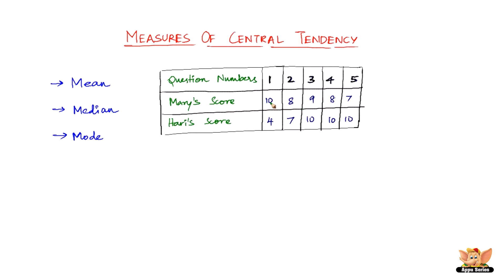Mary has scored 10, 8, 9, 8, and 7. Hari has scored 4, 7, 10, 10, and 10. Upon getting their test copies, both of them found their average scores. Mary's average score was more than Hari's. Therefore, Mary claimed to have performed better than Hari, but Hari did not agree.